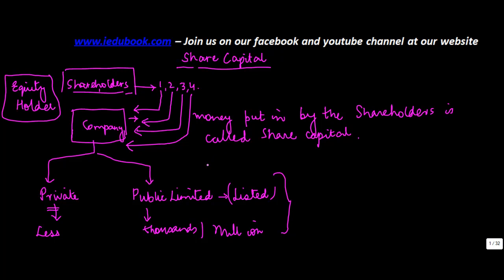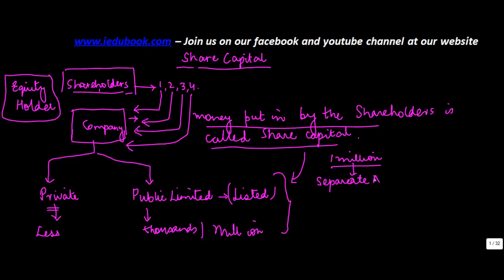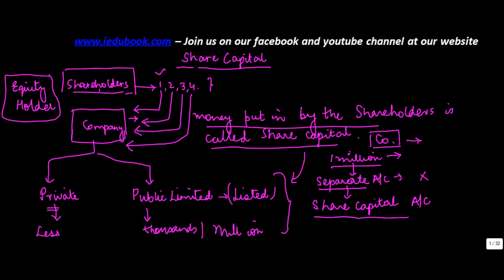So one of the important aspects in accounting is how do you account for this money? Let's say you have a public limited company where you have one million shareholders. It's practically impossible to open a separate account for each shareholder. Although with DMAT accounts you can individually trace your accounts, for the company — which is a separate artificial person — what the company does is open a share capital account. All entries relating to funds contributed by shareholders, money paid back to them, or returns given to them are recorded there. All of them are basically taken into the share capital account.